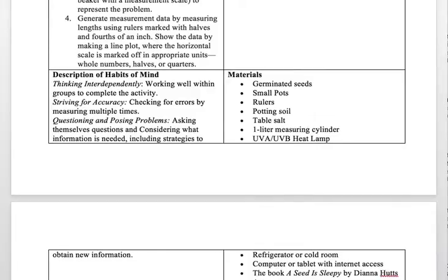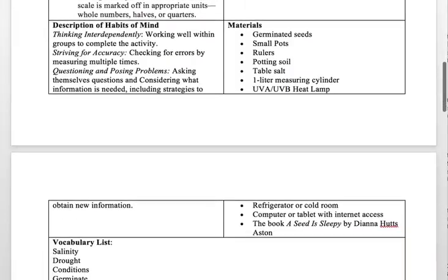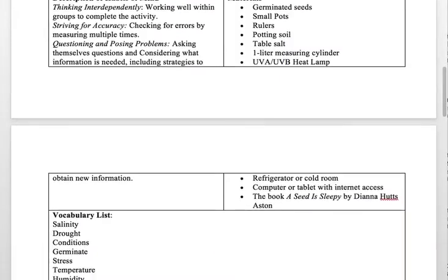Some materials we would need are: germinated seeds, small pots, rulers, potting soil, table salt, a one-liter measuring cylinder, a UVA/UV heat lamp, a refrigerator or cool room, a computer or tablet with internet access, and the book A Seed is Sleepy by Diana Hutz Aston — there is also a YouTube video of the reading, so that is another option.